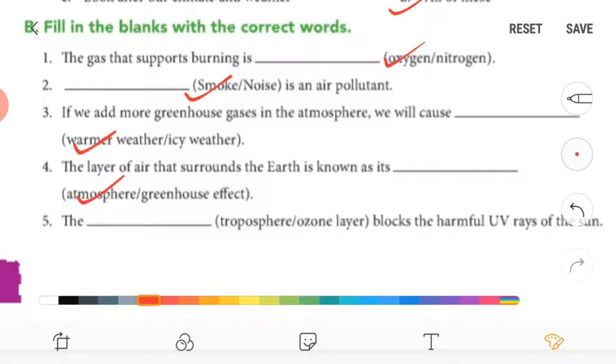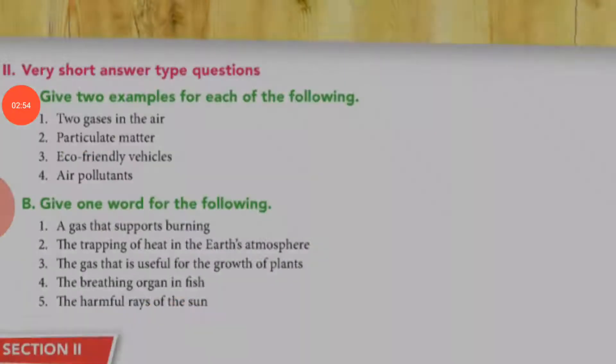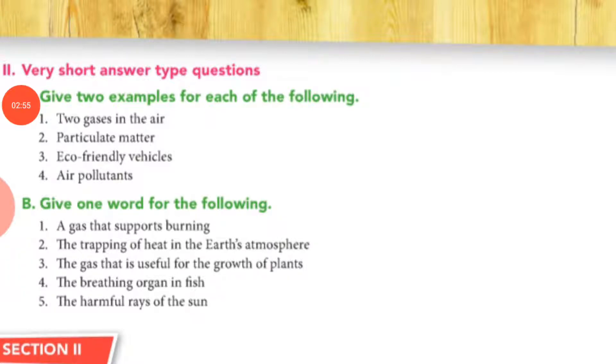Okay guys, now turn your page. Two examples, question number one, two gases in the air. So it is nitrogen, oxygen, carbon dioxide. These all are the gases, write down any two.